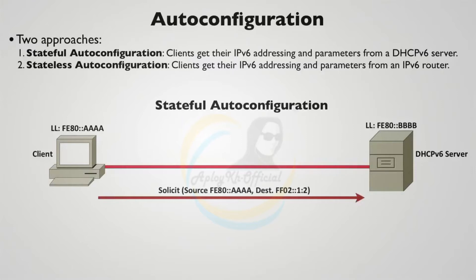We're sending a multicast message from the client's link-local address to a destination address of FF02::1:2. We know by the FF that this is a multicast address. You'll want to note that this multicast address represents all DHCP relay agents and servers.